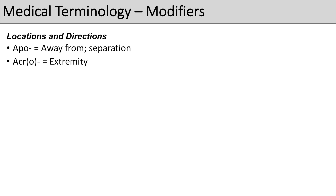The first prefix we're going to talk about is 'apo', which means away from or separation. The next one is 'acro', which means extremity — so you can think of your arms and legs. A word you might see here is acrocyanosis, which just means cyanosis of your extremities.